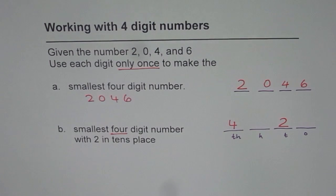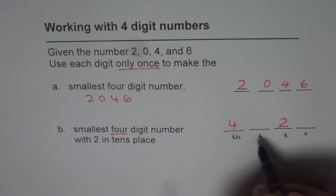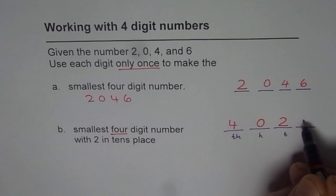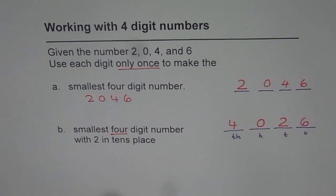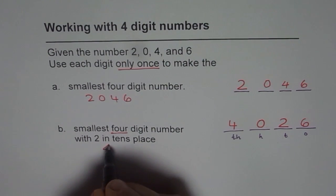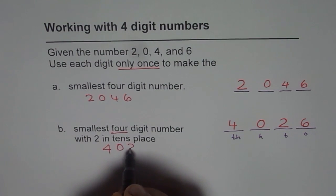So we have already taken care of two and four. We are left with zero and six. So we have a choice. In hundreds, what should I place? Of course, zero, since we are looking for smallest number. And six goes there. So that becomes the smallest four digit number with 2 in tens place. So we get a number as 4026.